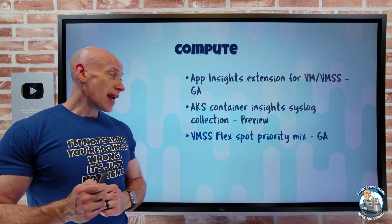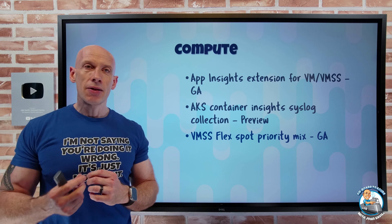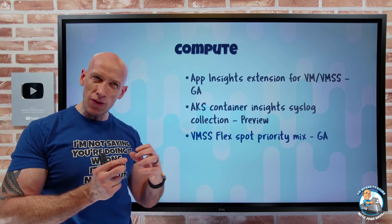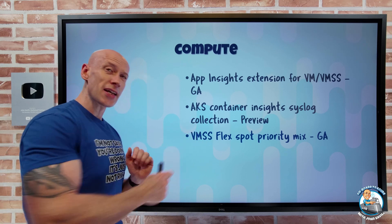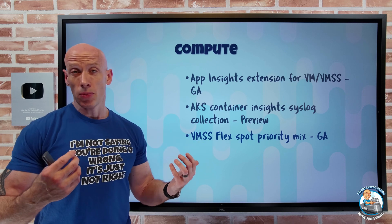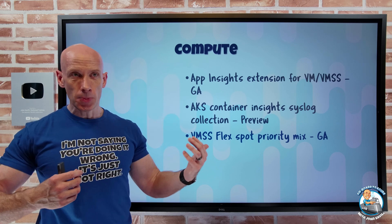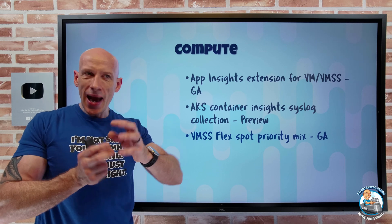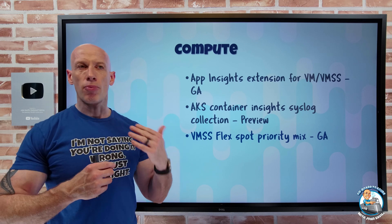Virtual Machine Scale Set Flex — remember, flexible orchestration mode compared to the standard uniform orchestration mode we had previously. The uniform mode: I have one template, everything is created from that template. With flexible orchestration — and I've got a separate video on this — I can just add VMs into the flexible orchestration. They can be different SKUs, they can even be spot and non-spot, but it does still have the concept of a VM profile. The VM profile acts a bit like the old uniform orchestration: if I want to create new VMs, it will create them based on that profile.